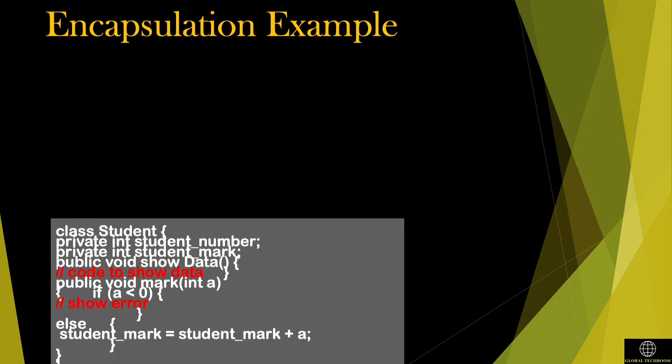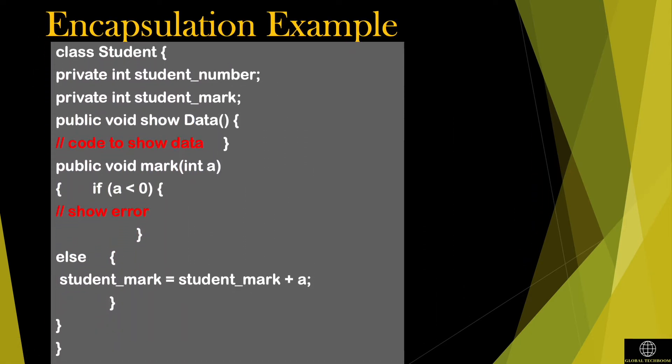In this encapsulation example, typically a variable in a class is set as private, as shown in the example here. It cannot be accessed with the methods defined in the class Student. No other class can access private data members or variables of another class. The secret information which is not essential is not visible to other classes.